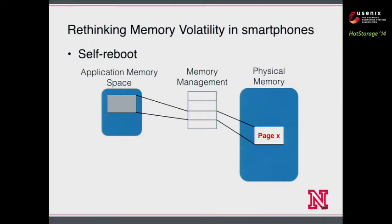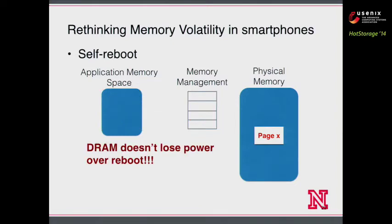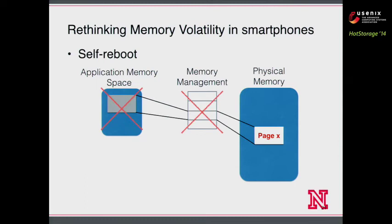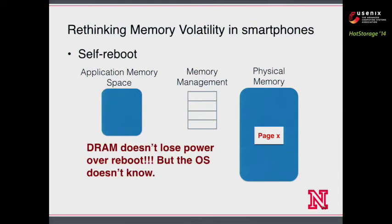When the system reboots, the OS restarts and the virtual memory system is reinitialized, so everything in virtual memory is gone. However, data in physical memory is still there over a reboot — physical memory doesn't lose power during a reboot. Unfortunately, the OS won't see it; it gets a brand new page table and treats all physical memory as if it's all zeros.